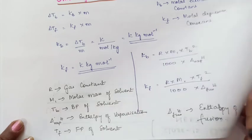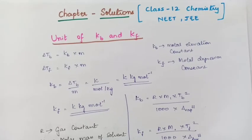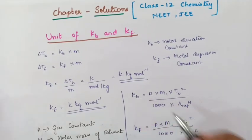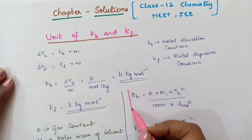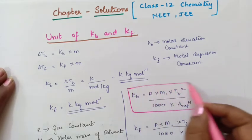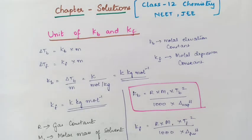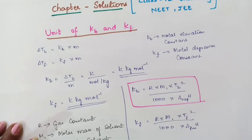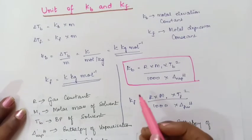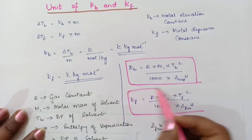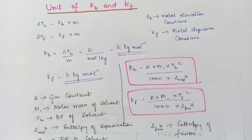So these are the terms here. This is very important students. These two formulas you need to remember. That is Kb equals R into M1 into Tb square divided by 1000 into enthalpy of vaporization, as well as Kf. These formulas will be very useful for the NEET examination. Using these formulas I will be solving some important problems in the coming videos.